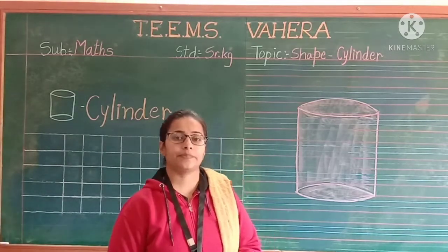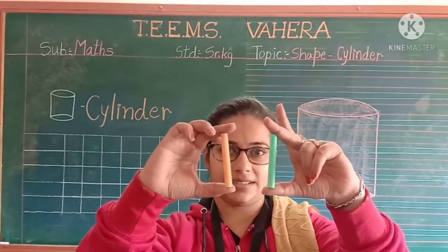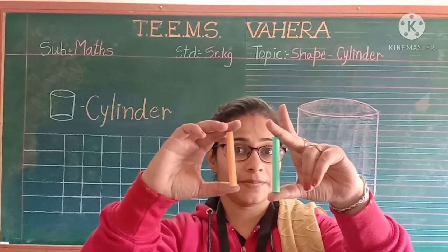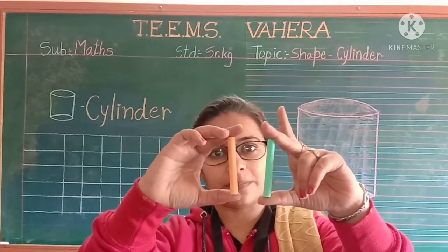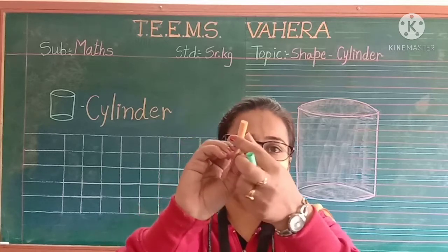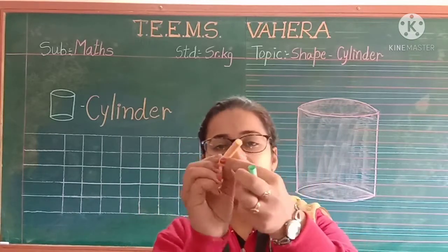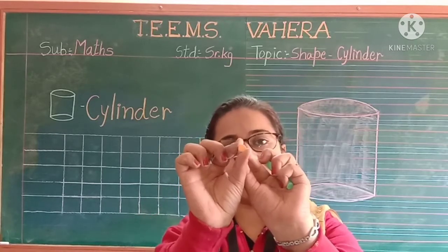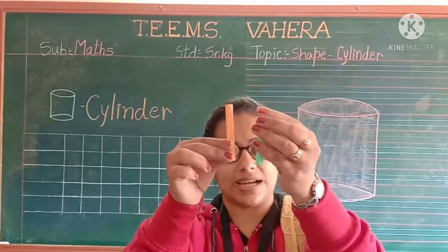Now see. I have chalk sticks in my hand. What is the shape of chalk sticks? These are in cylinder shape. Yeh jo hai na, usse hum cylinder shape kette hai. Wo round hoota hai. Iske yaha pe oopar aur neechhe dono side round hoota hai — circle hoota hai.